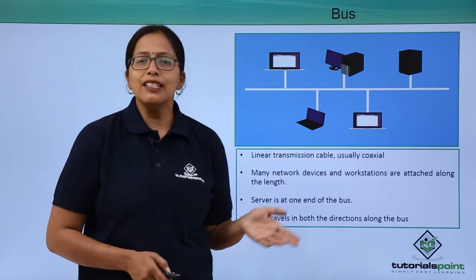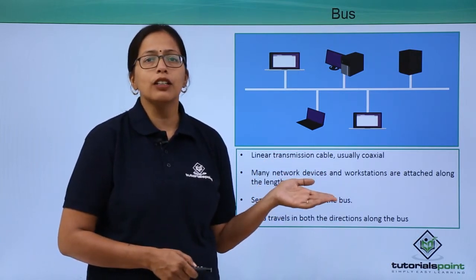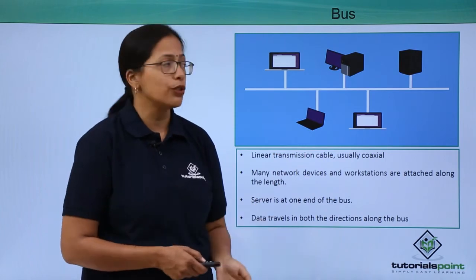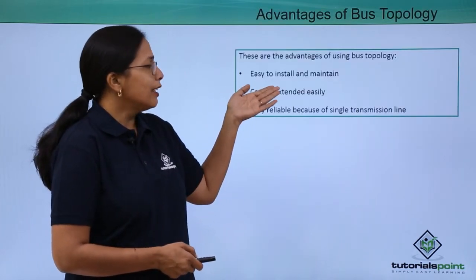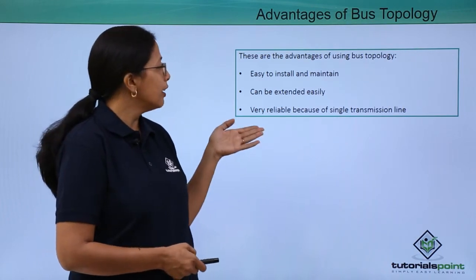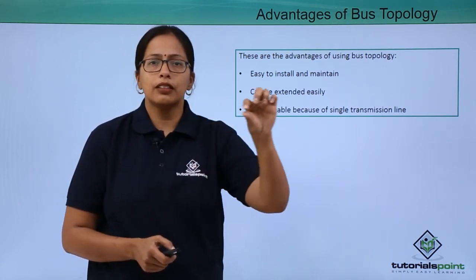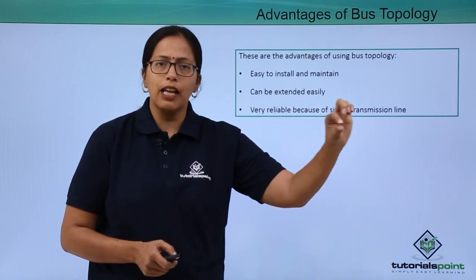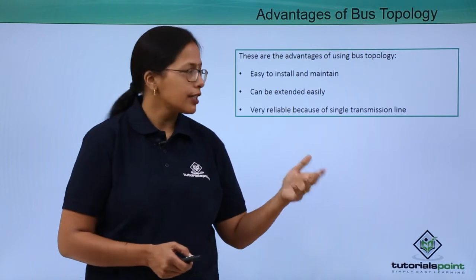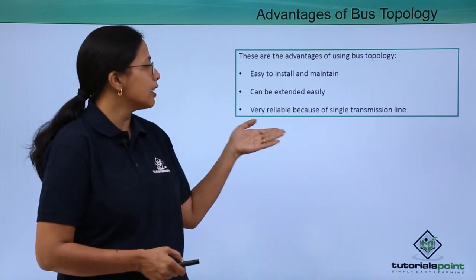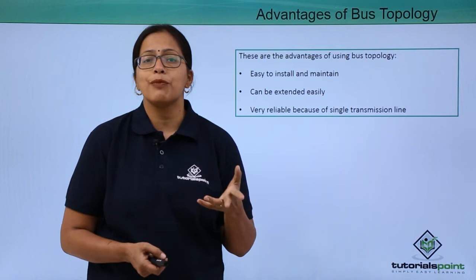This is one of the easiest topologies to install and maintain. It can also be extended easily because there is one backbone — that cable just has to be extended and workstations added on either side. Last but not the least, it is very reliable because of a single transmission line.